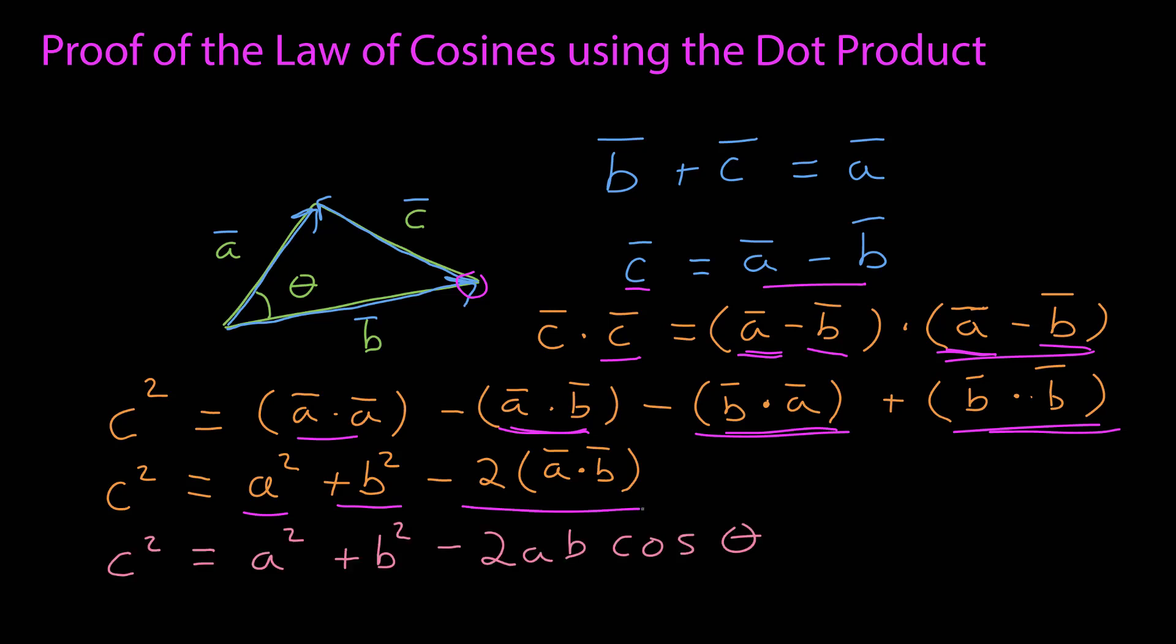Using the geometric interpretation of the dot product, that turns into c squared is equal to a squared plus b squared minus two a b cosine theta. And theta is the angle between a and b, tail to tail, and the angle opposite c, thus it fits the definition of both the dot product and the law of cosines.